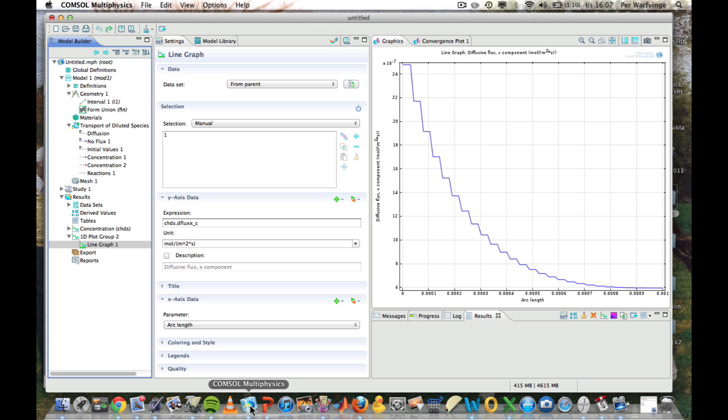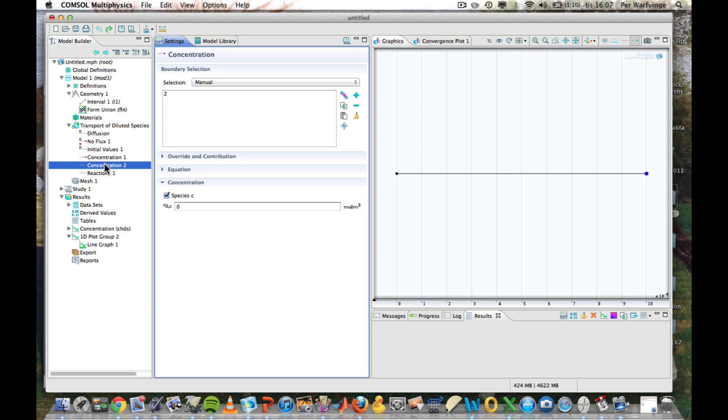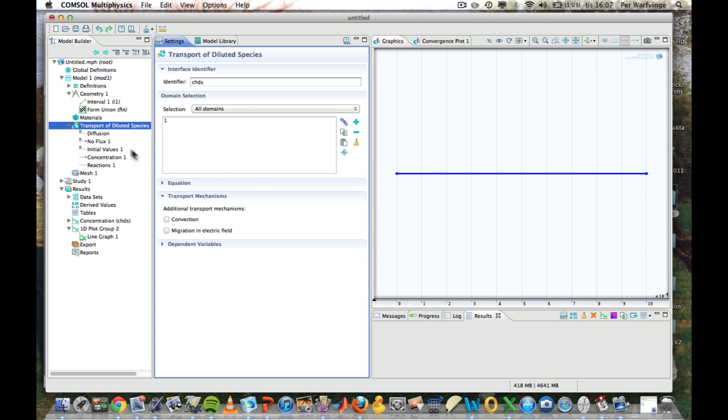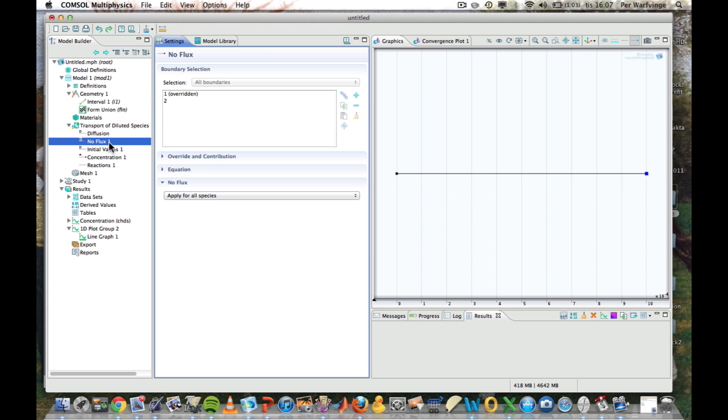To make this change in COMSOL, the only thing we have to do is to take away the concentration condition to the right. We'd right-click on it and delete it. Yes, we're sure. Then we look at the no-flux, and we see that a no-flux has been introduced to the right.